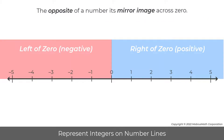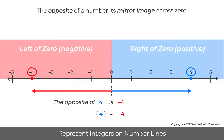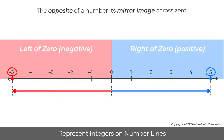The opposite of a number is its mirror image across zero. For example, if four is represented by an arrow from zero to four, the opposite of four is found by reflecting the arrow across the tick mark for zero. So the opposite of four is negative four. In the next example, if negative five is represented by an arrow, the opposite of negative five is found by reflecting this arrow across the tick mark for zero. So the opposite of negative five is five.